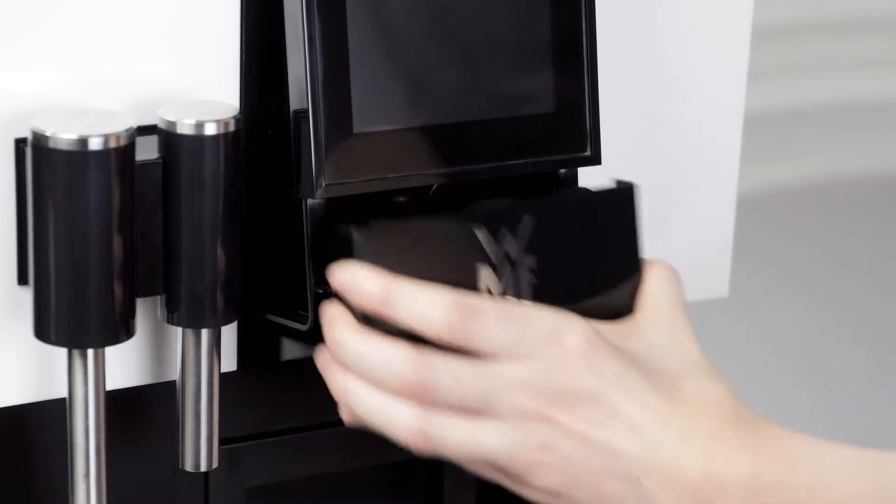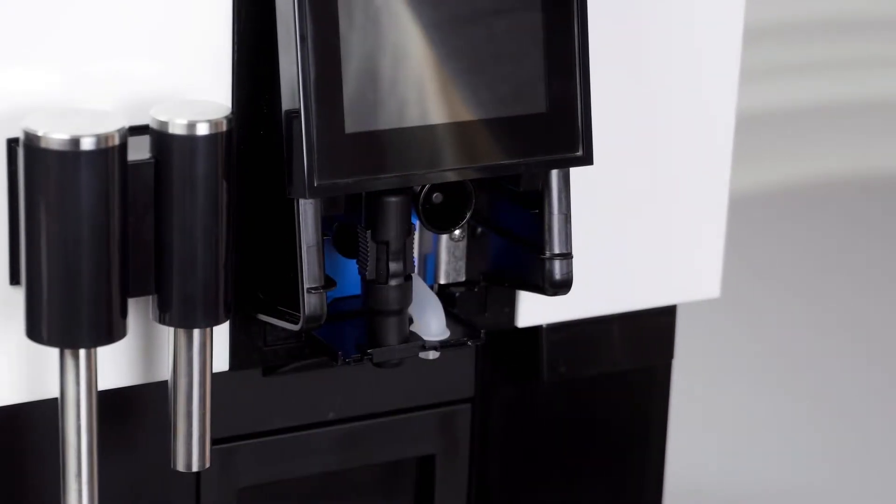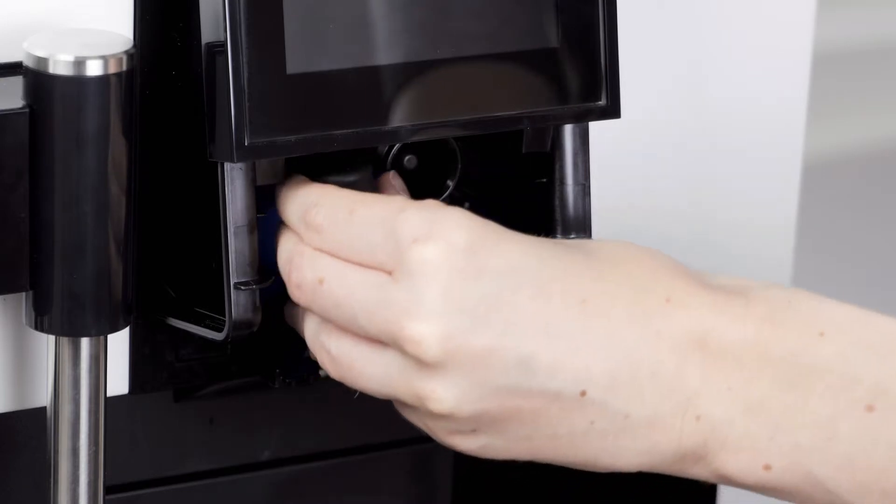Switch the machine off, pull out the cover of the coffee spout and remove the milk foamer including the milk nozzle.